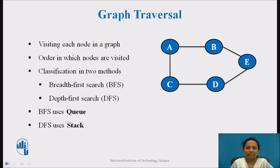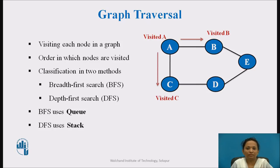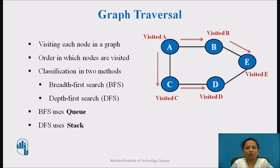What is graph traversal? Graph traversal is the process of visiting each node in the graph. Through graph traversal we will be visiting each node in the graph at least once. This graph traversal process is classified based on the order in which the nodes are visited while traversing the graph.